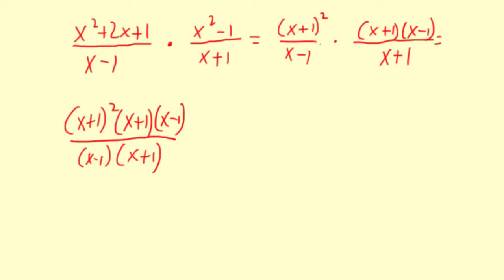And remember when you multiply with fractions, you just multiply the numerators and multiply the denominators. So this can be simplified. There's an x plus 1 in common here, x minus 1 in common here. So the end result is x plus 1 quantity squared. And you can just leave that in factored form. So that's how you multiply.